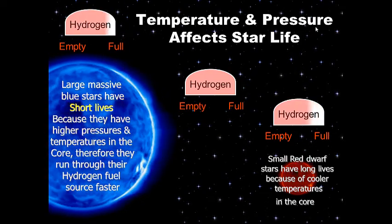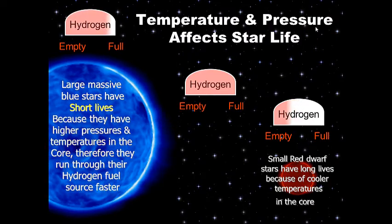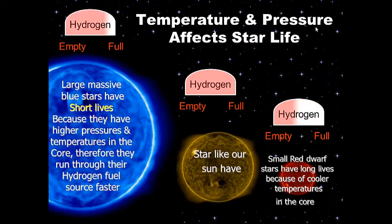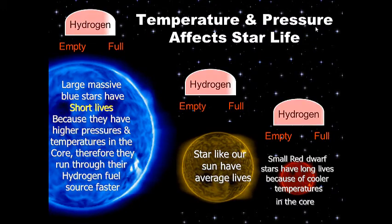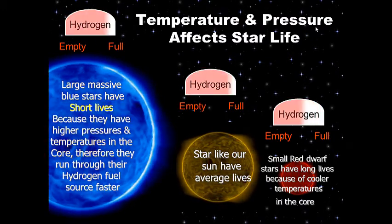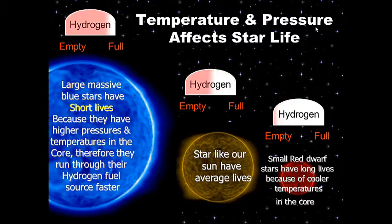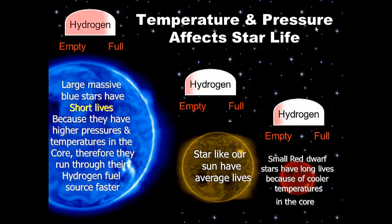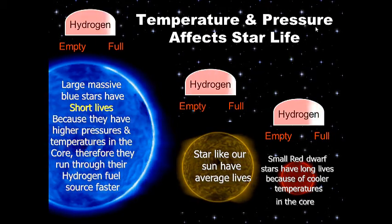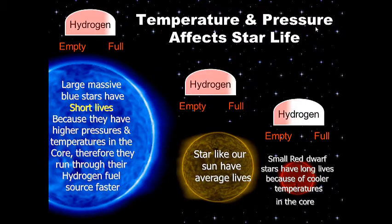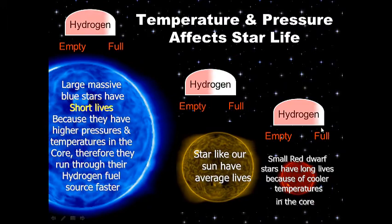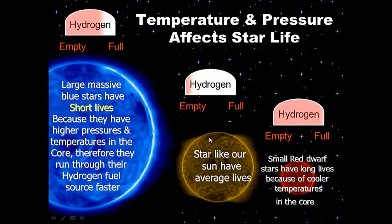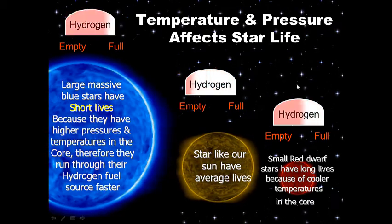All the red dwarf stars we see in the night sky have been around since the beginning of our universe. Stars like our Sun have average lives because they're not as cool as a red dwarf but not as hot as a blue main sequence star — they're average in temperature and pressure. So we have blue stars with extremely short lives of about 1 billion years, red dwarf stars with lifespans of about 20 billion years, and stars like our Sun with a total lifespan of about 10 billion years.